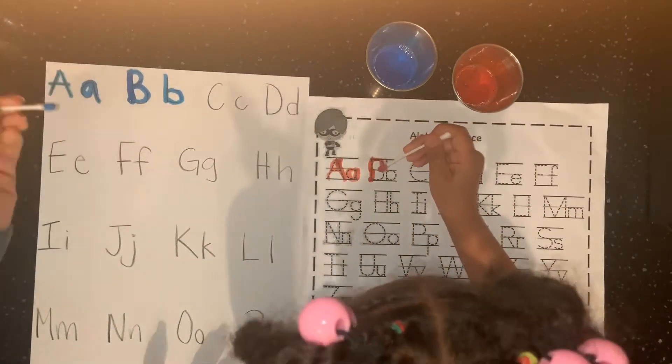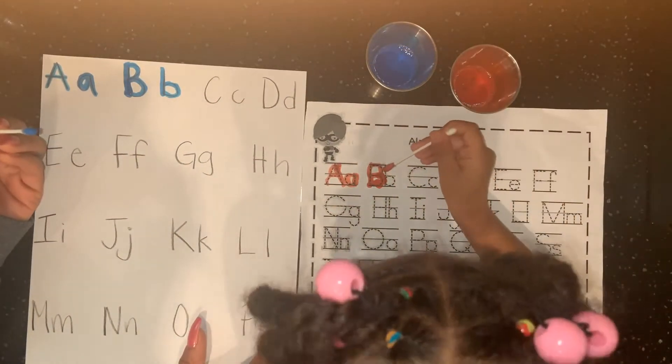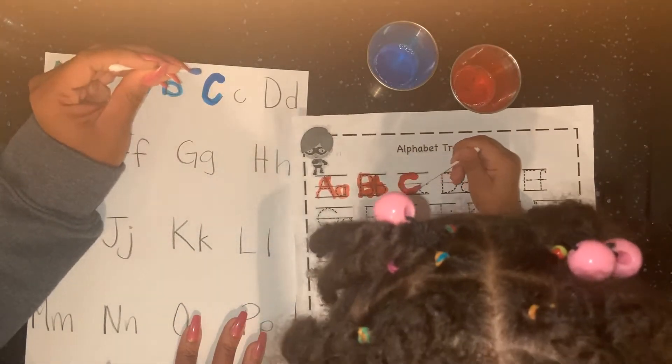We are going to start by tracing our alphabet A through Z using the uppercase which are the big letters and the lowercase small letters.